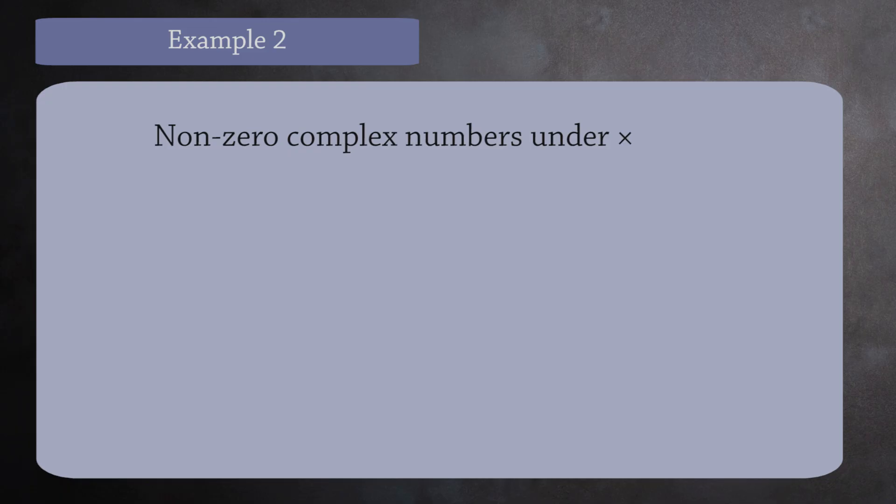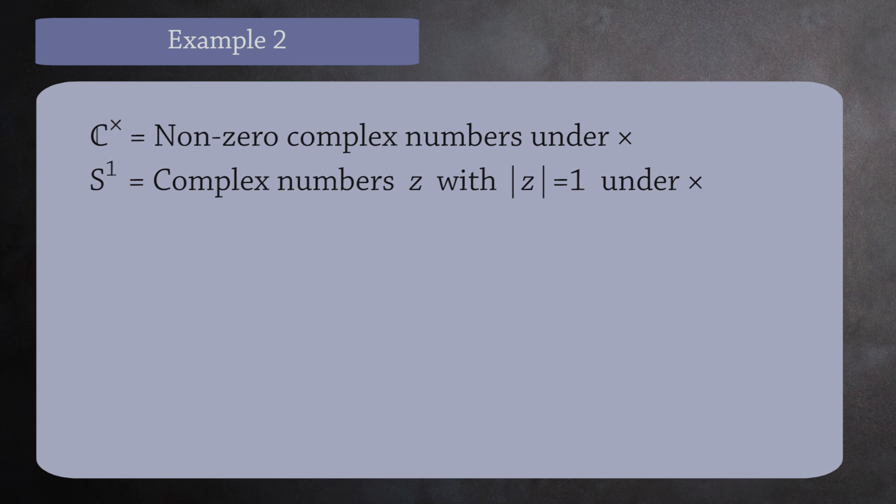For our next example, the first group will be the non-zero complex numbers under multiplication, which we denote by C×. Here it's understood that you are not including zero because zero does not have an inverse under multiplication. The second group will be the complex numbers with absolute value of 1 under multiplication. We'll denote this group by S¹. This is a standard notation when talking about n-dimensional spheres. The S is short for sphere, and the 1 tells us the dimension. In this case, S¹ is just a circle in the complex plane with a radius of 1.